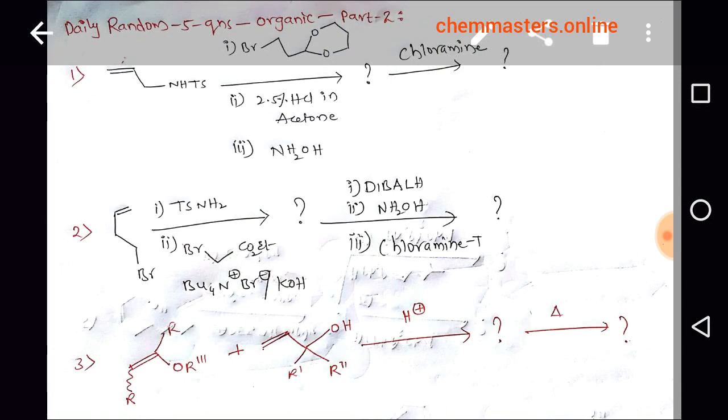In the first question, N-tosyl allelic amine is reacting with a reagent in three steps to get a product. What is that product? Then if we add chloramine, what is the final product? That is the first question.